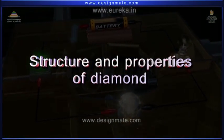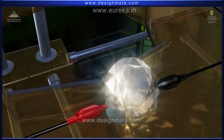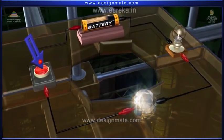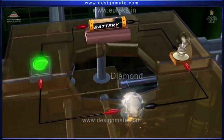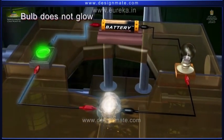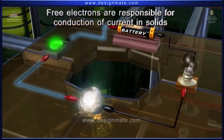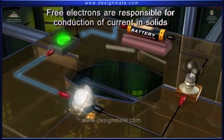Structure and properties of diamond. When an electric current is passed through a diamond, the bulb does not glow. We all know that free electrons are responsible for conduction of current in solids.